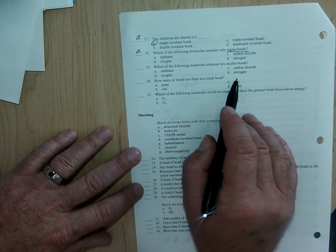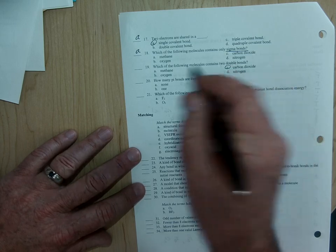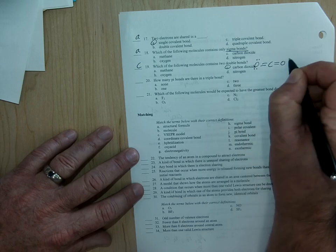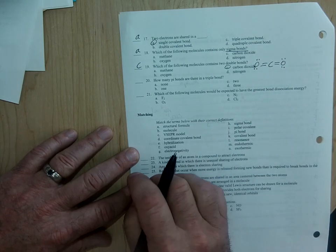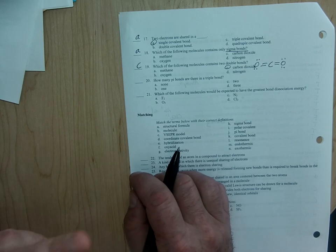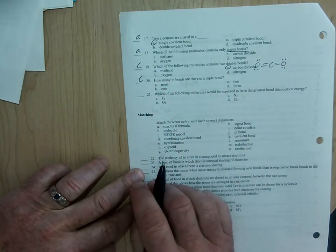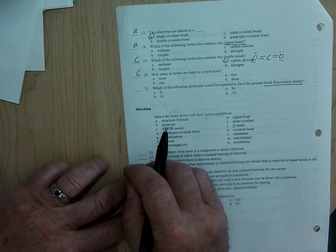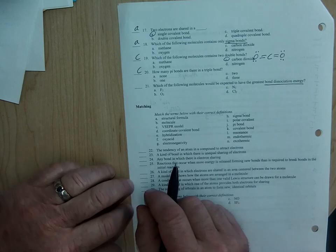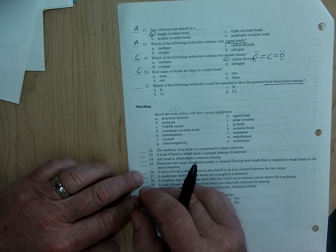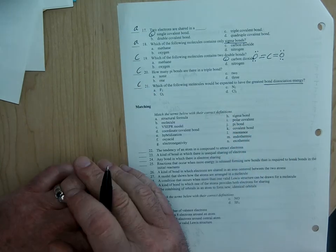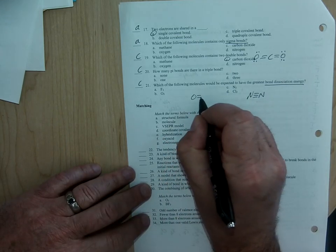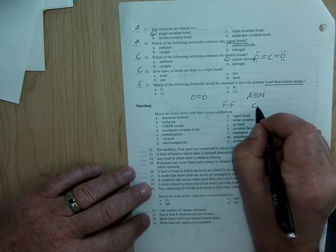Which of the following molecules contain two double bonds? That's going to be carbon dioxide, and we've drawn the Lewis structure for that several times. CO2 is like this, two double bonds. Unshared pairs, unshared electrons on the ends. How many pi bonds are there in a triple bond? So a triple bond is one sigma bond and two pi bonds, so there would be two. Which of the following molecules would be expected to have the greatest bond dissociation energy? Single bonds are longer than double bonds, which are longer than triple bonds. So the one with the greatest bond dissociation energy is going to be the one with a triple bond, which in this case is nitrogen.